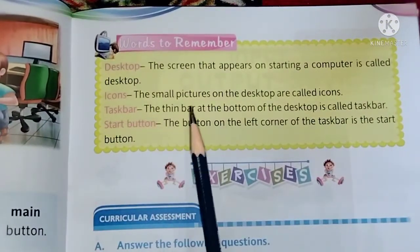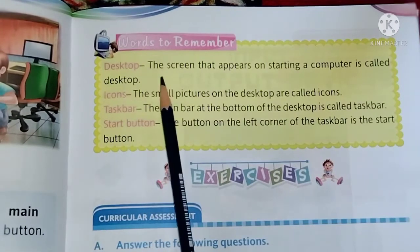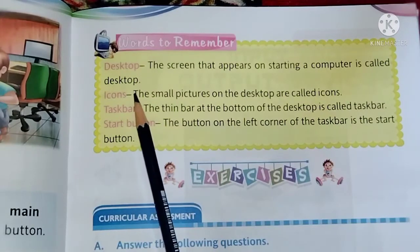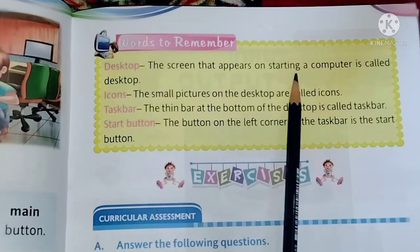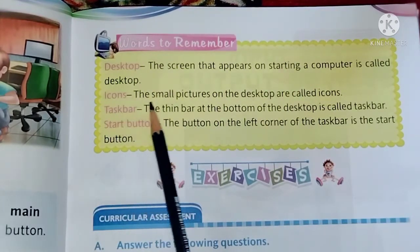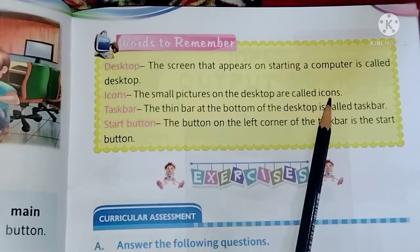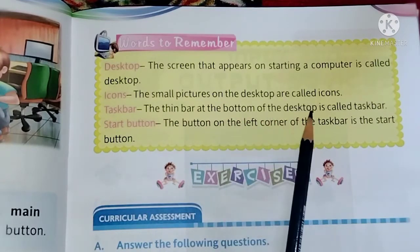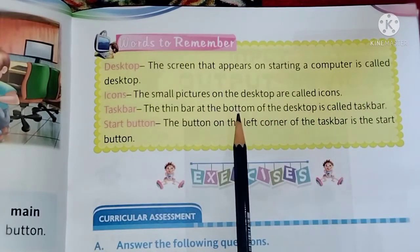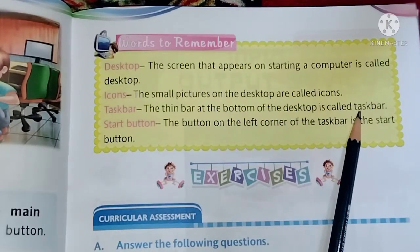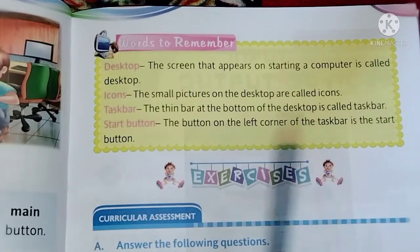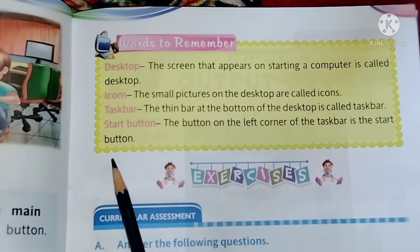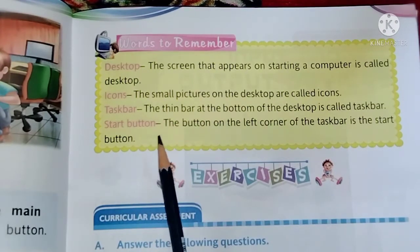On page number 31: Words to Remember. Desktop — the screen that appears on starting a computer is called the desktop. Icons — the small pictures on the desktop are called icons. Taskbar — the thin bar at the bottom of the desktop is called the taskbar. Start button — the button on the left corner of the taskbar is the Start button. These are the words you need to remember.